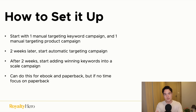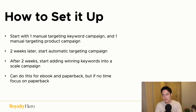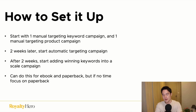If you do have a good book, we can move on to the setup process. I recommend starting with one manual targeting keyword campaign and one manual targeting product campaign. Two weeks later, start the automatic targeting campaign. Around the same time, you can start adding winning keywords into a scale campaign. You can do this for both ebook and paperback, but if your ebook isn't profitable, just do it for paperback. So essentially you're setting up four campaigns.